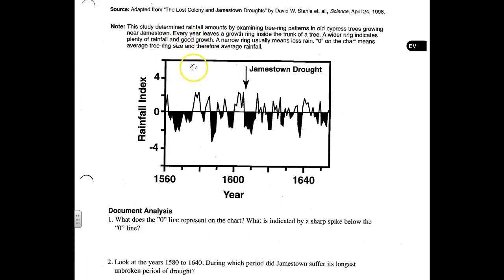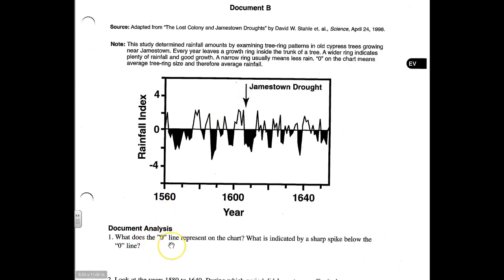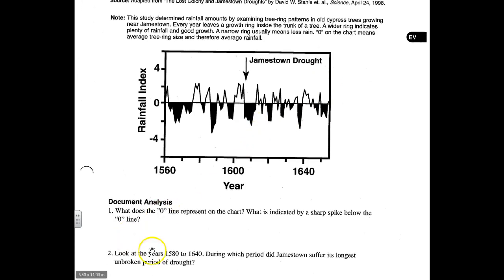Now that we've looked at the document and read the note, let's look at the document analysis questions below the document. When answering questions that follow the document, the first place to look is in the document itself, including the note in document B, which provides important information. Question one: what does the zero line represent on the chart, and what is indicated by a sharp spike below the zero line? The answer can be found right in the note section above the chart.